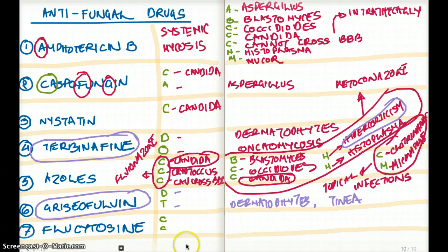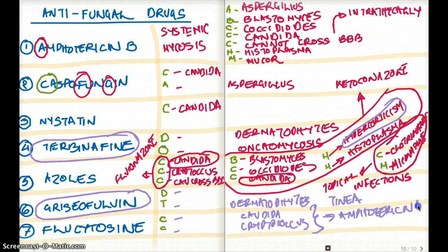Then we have the pyrimidine synthesis inhibitors by conversion to 5-fluorouracil. Those are the flucytosine. And flucytosine is also used for systemic mycosis because it's used in combination with amphotericin B. So some examples are candida and cryptococcus. These are some examples. And these are in combination with amphotericin B because they're used for systemic mycosis.